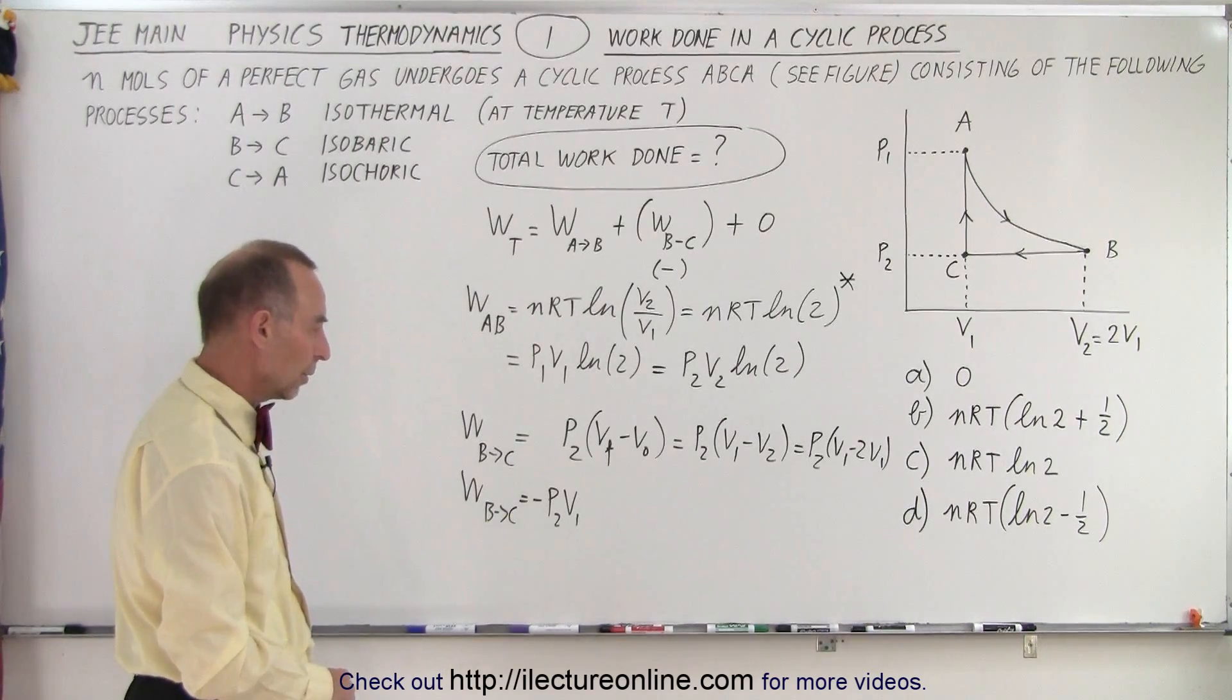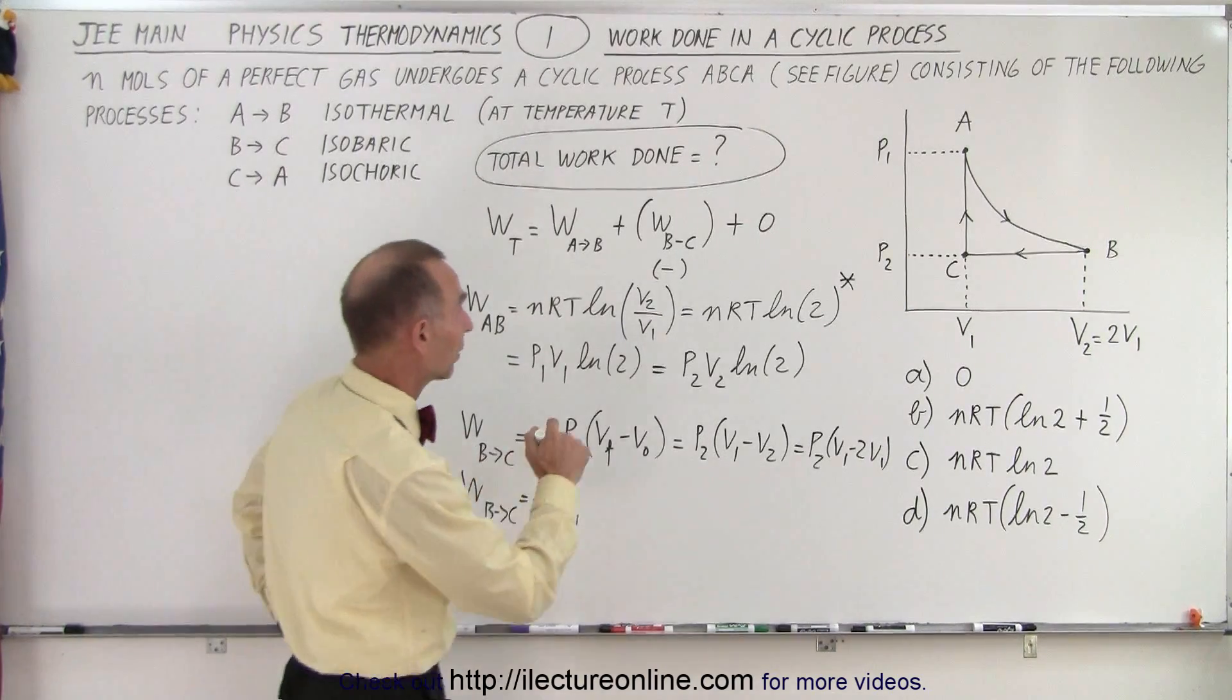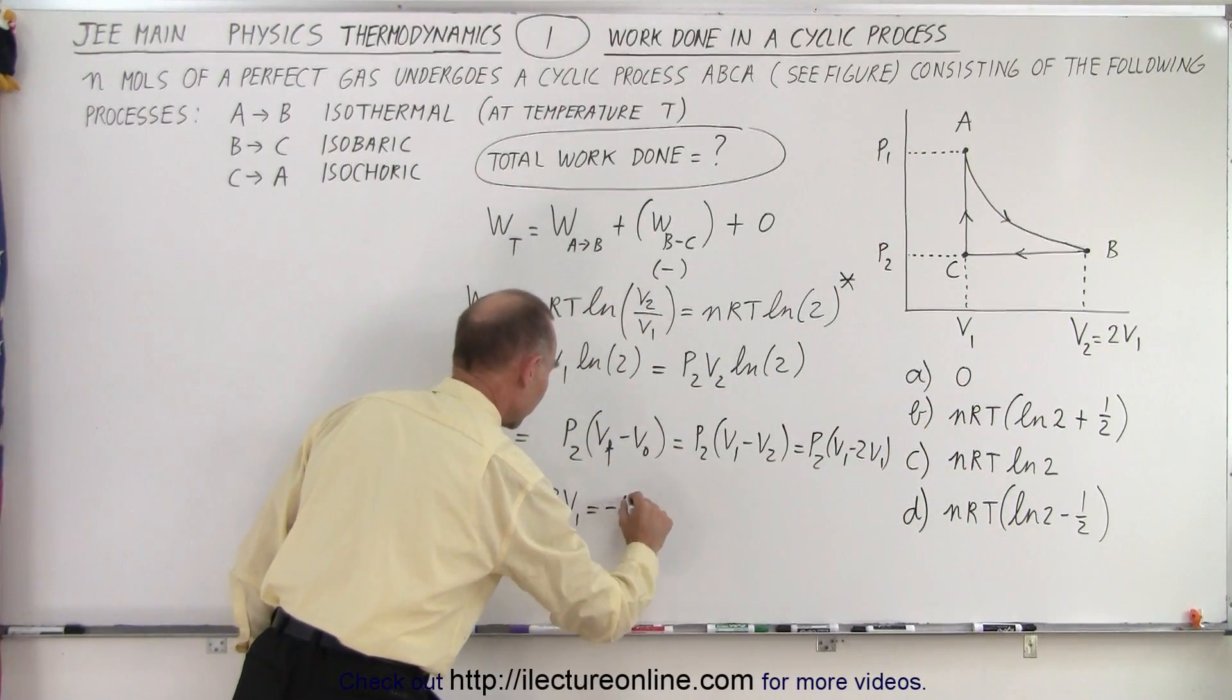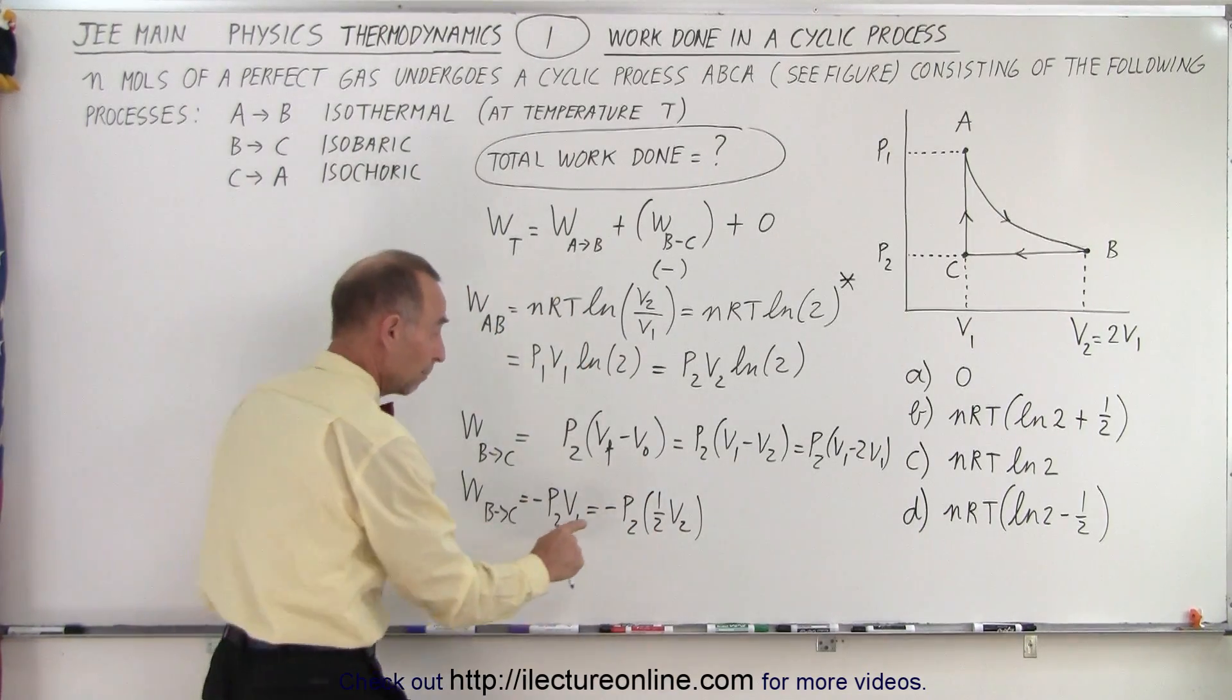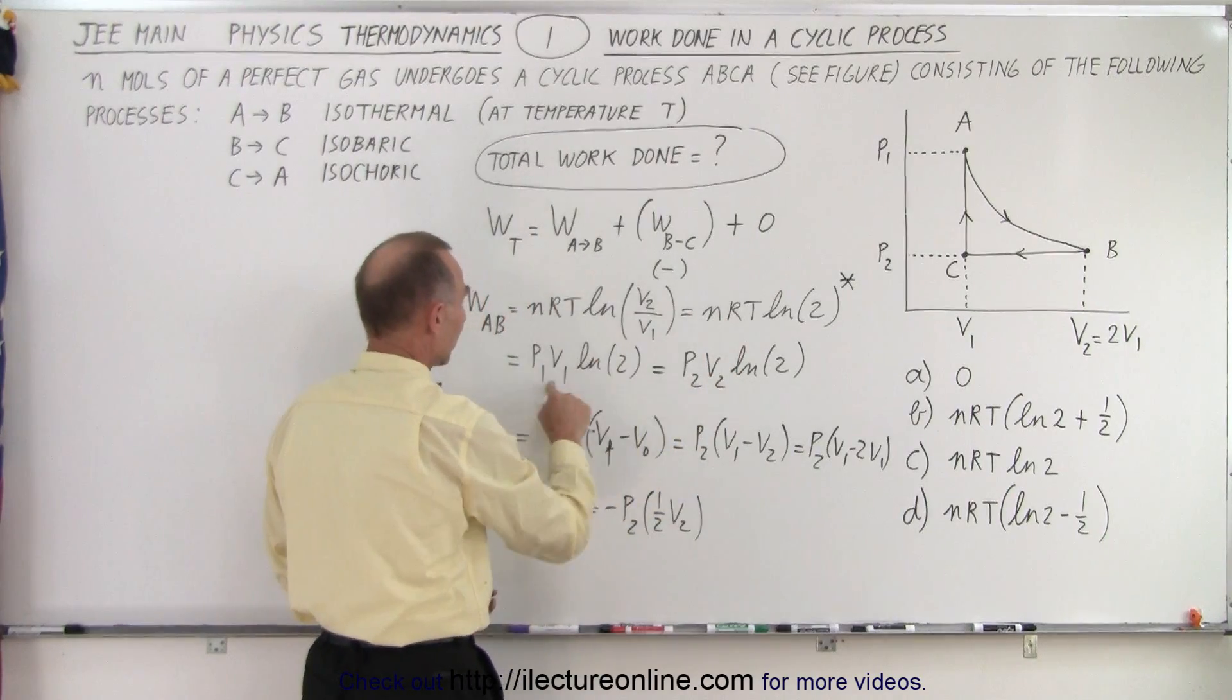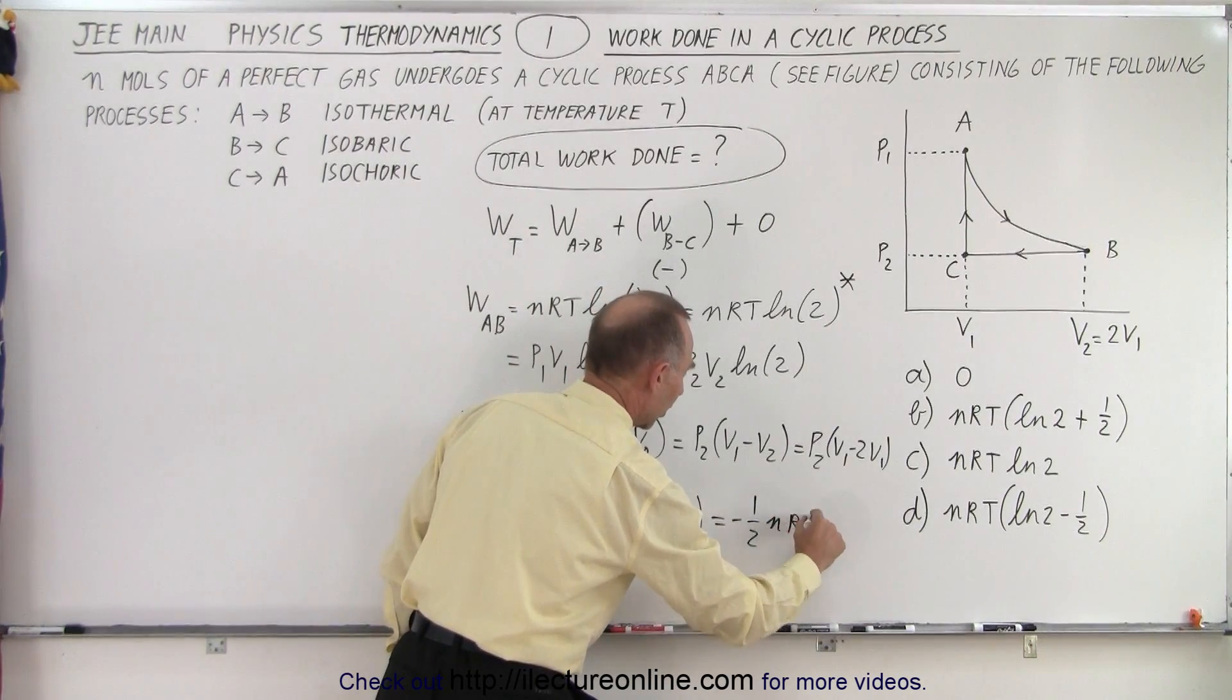V1 can be written as half V2, because V1 is half of V2, so this can be written as minus P2 times a half V2. And why did I do that? Because P2V2 is the same as nRT. nRT is P1V1 or P2V2, so this can be written as minus one half times nRT.